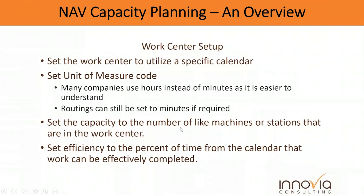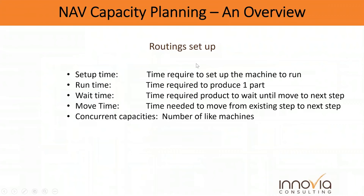The other two fields to enter are the capacity number and efficiency. Capacity is how many like machines — going back to our CNC example with three machines, capacity would be three, not one. Efficiency is what percent of time you'll really get out of it. NAV can do infinite scheduling, but if you tell it you have 16 hours of production capability, you might only really get 98 percent of that because people go on break and other things happen. You can put those numbers in so NAV doesn't over-calculate the capacity you have to work with.